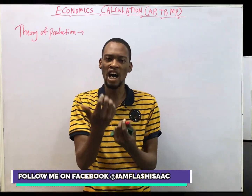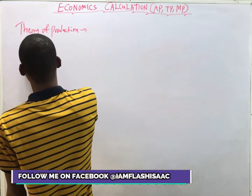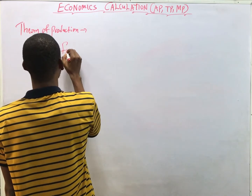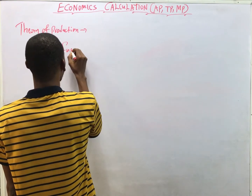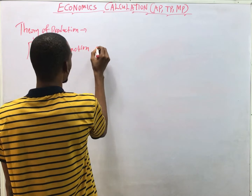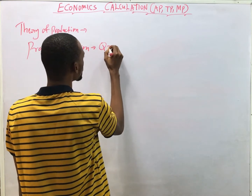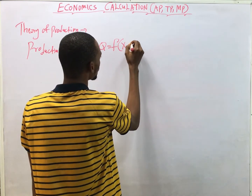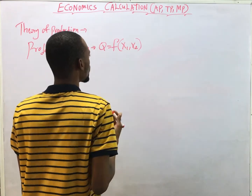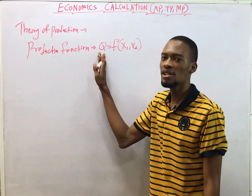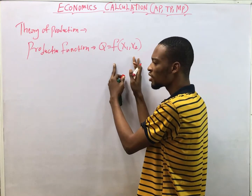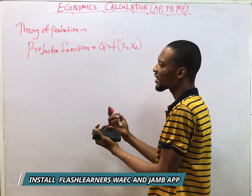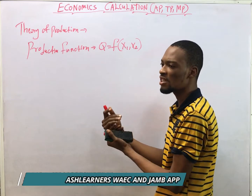And production function — firms realize that there is actually a particular input that will give you a particular output. Production function relates output to input. So this is written as Q equals a function of S1 and S2, implying that output is a function of input.